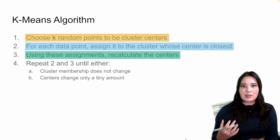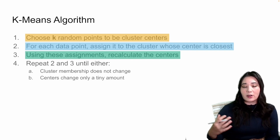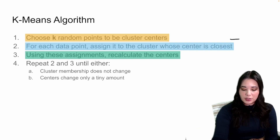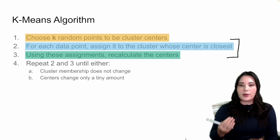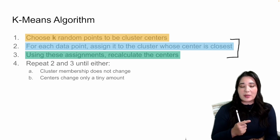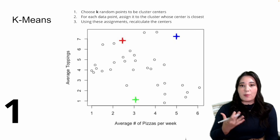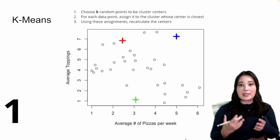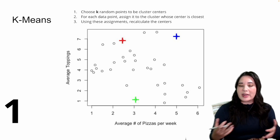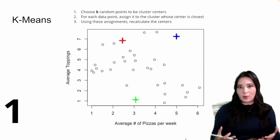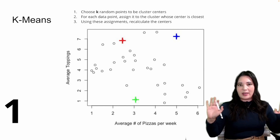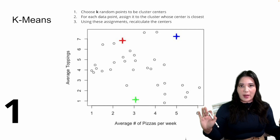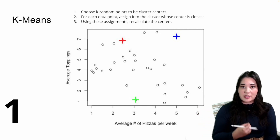Initialization typically means selecting k random data points from our data set and treating those as the centers of our k clusters. Then we take steps two and three and repeat them over and over. Step one is just randomly selecting k different data points — in this case k equals three — and setting them as the center of our clusters, indicated by the little plus marks on the graph. This is just a starting point that we'll improve.